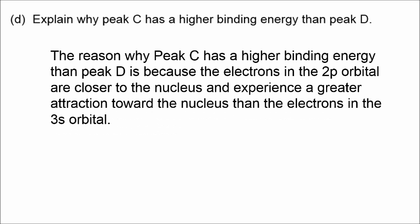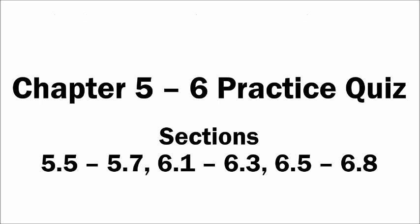Peak C has a higher binding energy than peak D because the electrons in a 2P orbital are closer to the nucleus and harder to remove — they experience a greater attraction toward the nucleus than the electrons in the 3S orbital. Moving from principal quantum number n equals 2 to n equals 3 means going higher in energy, so the lower energy level is closer to the nucleus and has a higher binding energy. That wraps up the explanations for the chapter 5 and 6 practice quiz. Good luck studying!